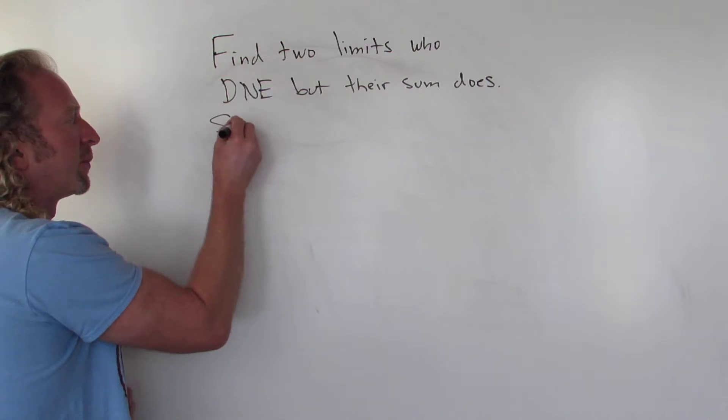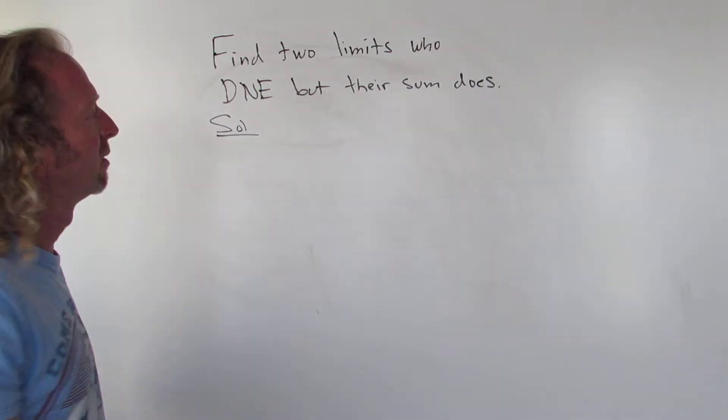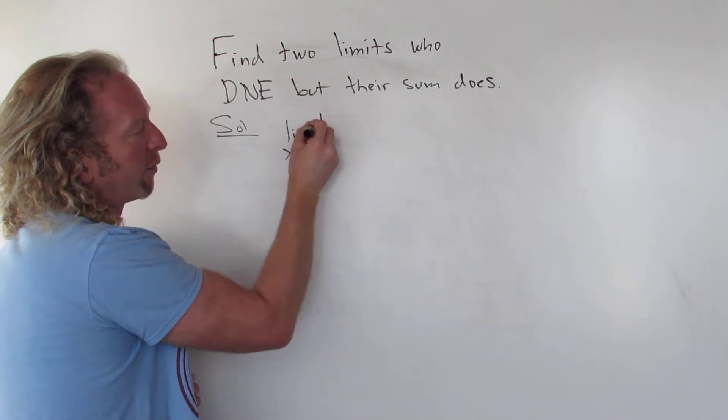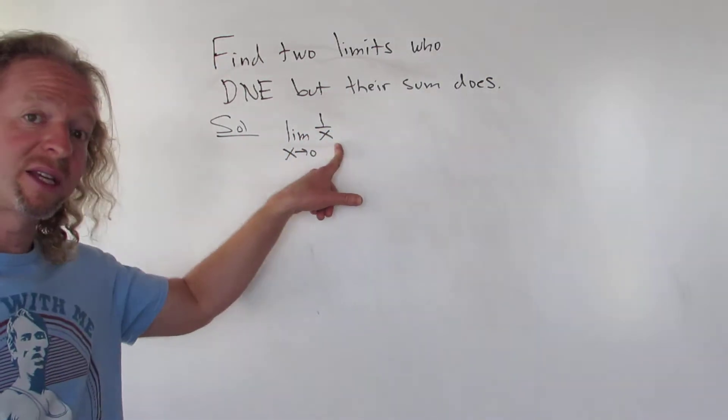So let's work it out. So one solution could be something like the limit as x approaches 0 of 1 over x. This limit does not exist. And why?